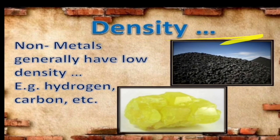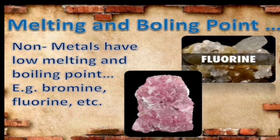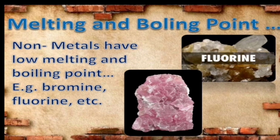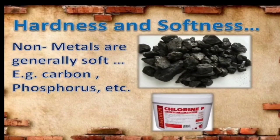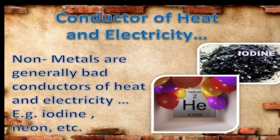Next, density: non-metals generally have low density because they are in the form of gases. Examples: hydrogen, carbon. Melting and boiling points: non-metals have low melting and boiling points because they are in the form of gases. Hardness and softness: non-metals are generally soft — carbon and phosphorus are soft. Conductors of heat and electricity: non-metals are generally bad conductors of heat and electricity.